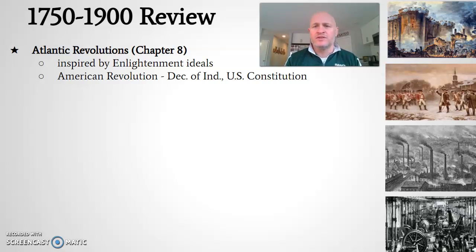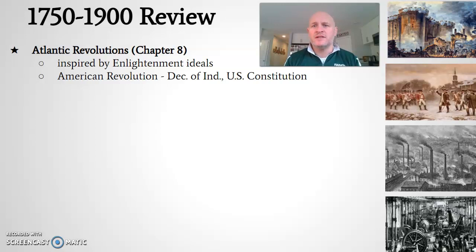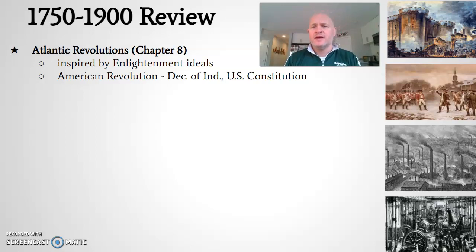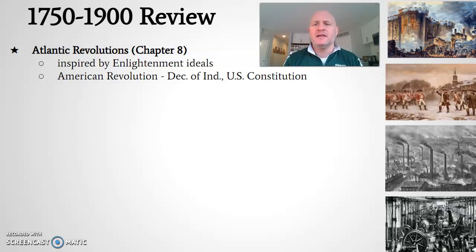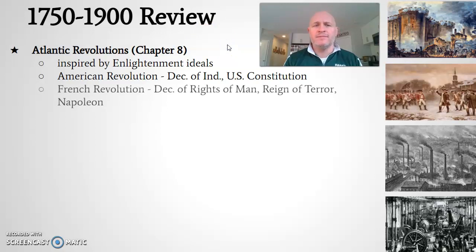The Articles of Confederation served briefly as the organizing document of a very loosely confederated United States, and that gave way to the U.S. Constitution, which included the Bill of Rights and a new form of government with a three-branch system — the legislature, the executive branch, and the judicial branch — with elements inspired by Enlightenment thinkers as well as Roman and Greek history.